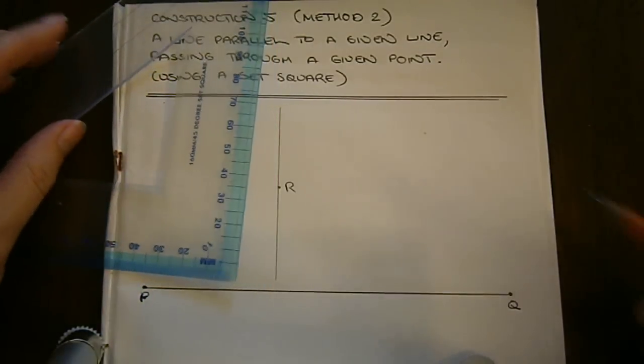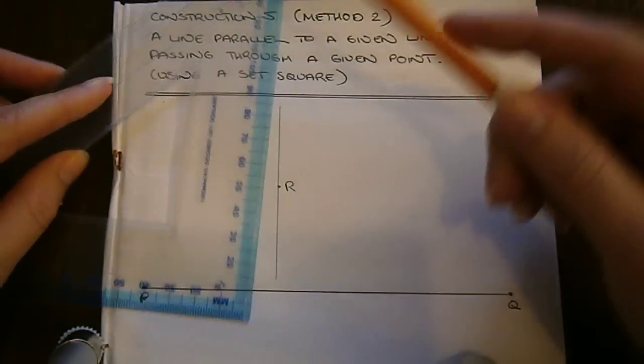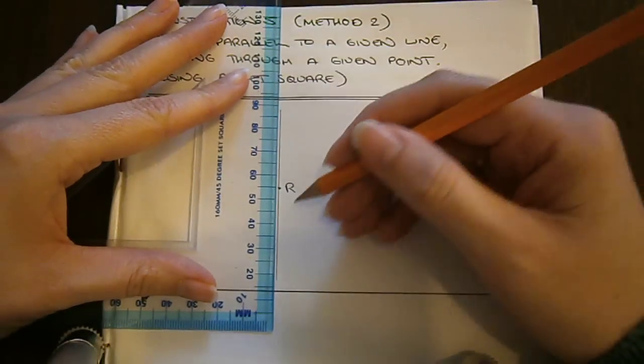We've now drawn a perpendicular line through R, perpendicular to the line PQ.